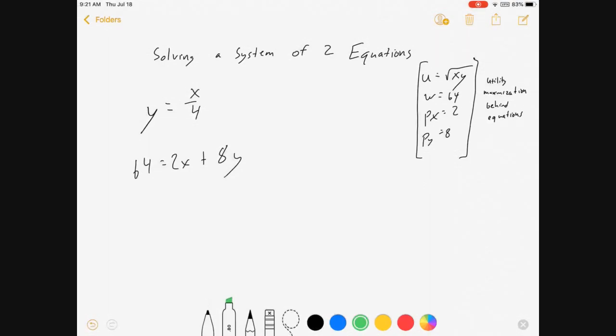It comes from a utility maximization problem where we maximize utility square root of xy subject to this equation, our budget constraint. 64 bucks to spend on the two goods where the price of good x is 2, the price of good y is 8. But that's not really relevant.